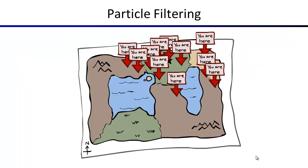One possible way of tracking a hidden state is the forward algorithm: at all times you have a vector that, for every possible value of the hidden state, gives a probability. For Ghostbusters that's where's the ghost; for robot tracking it's where's my robot; for speech recognition it's what part of a word am I saying. What particle filtering does as an approximation is instead of considering every possibility, you just have a sample of hypotheses. You don't need the whole vector — you just want an approximate idea of what's going on.